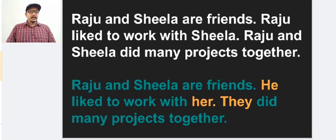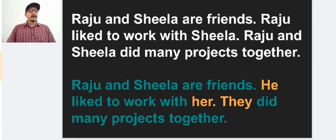Before that let us look at one example. Raju and Sheila are friends. Raju likes to work with Sheila. Raju and Sheila did many projects together. Grammatically these sentences are correct, there is no error. But the people who are speaking or hearing these sentences are not comfortable with this, because the nouns Raju and Sheila are repeating many times.